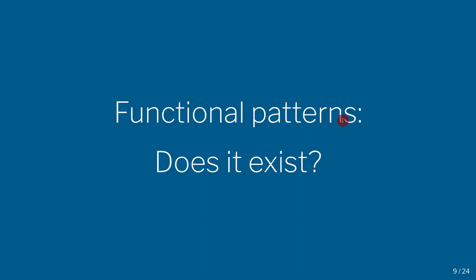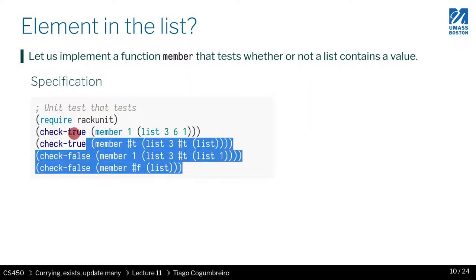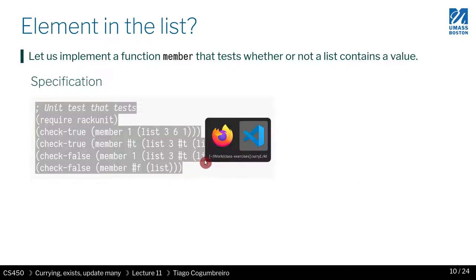In this lesson we're going to implement a functional pattern where we're checking if something exists in a list. It's not whether the functional pattern exists — it's whether an element of a list exists. Let's start with the example. I'm going to copy-paste and create the example.